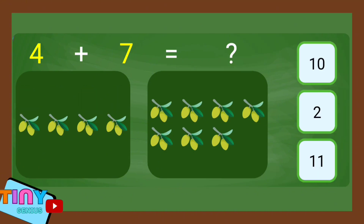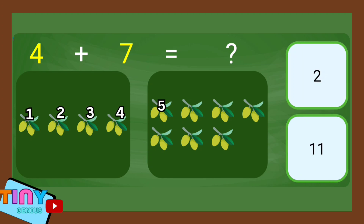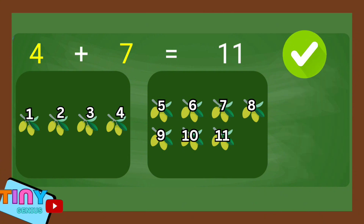4 plus 7 equal. 1, 2, 3, 4, 5, 6, 7, 8, 9, 10, 11.